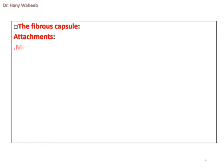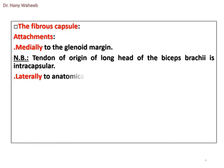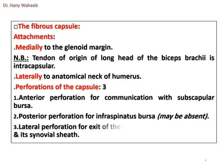The fibrous capsule — attachments: medially to the glenoid margin; the tendon of origin of the long head of the biceps brachii is intracapsular. Laterally it attaches to the anatomical neck of the humerus. Perforations of the capsule: 1. Anterior perforation for communication with the subscapular bursa. 2. Posterior perforation for the infraspinatus bursa, which may be absent. 3. Lateral perforation for exit of the tendon of the long head of biceps and its synovial sheath.